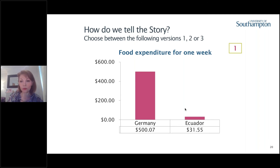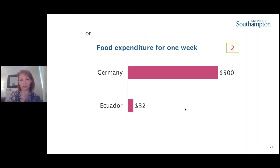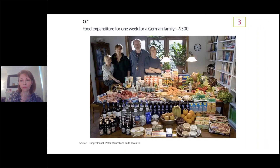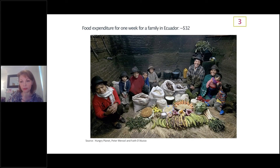We have scenario one — one visual. This is scenario two, a different perspective or angle. How about having two images together? A family with food that costs $500 per week in Germany, and in Ecuador another image reflecting the same story. Which one is more loyal and telling the story in a better way?